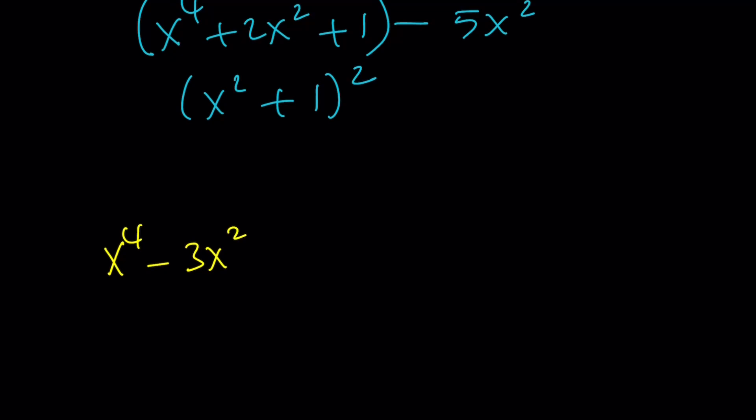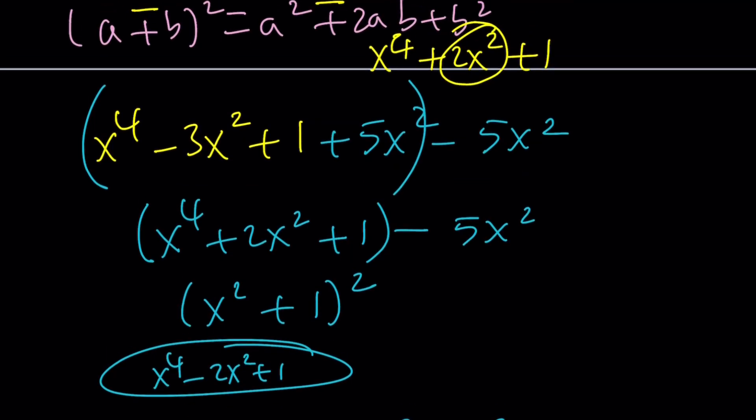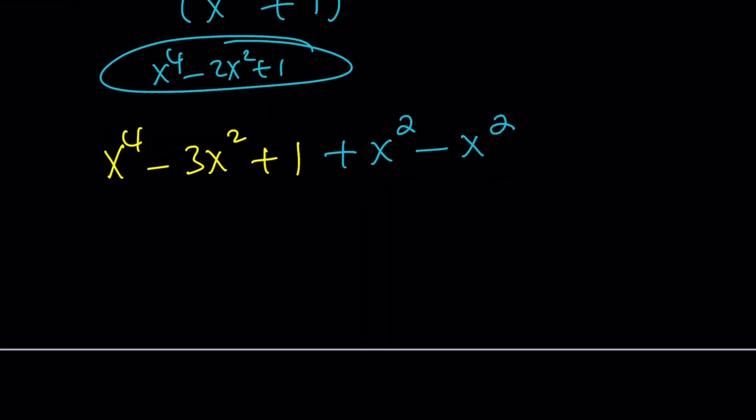Okay. So we start with this. And this time, my goal is to get to x to the fourth minus 2x squared plus 1. Because that is a perfect square. So now this time, I'm going to be just adding x squared to both sides. And then, of course, I need to subtract it. Make sense? The same thing we did. We added and subtracted. We added and we subtracted.